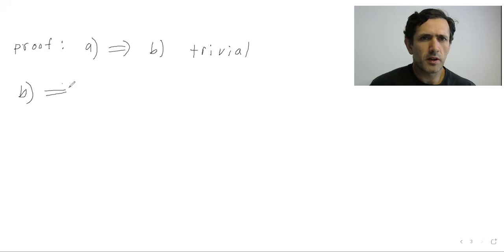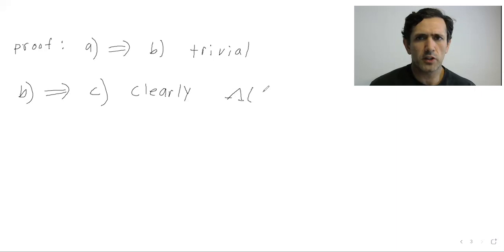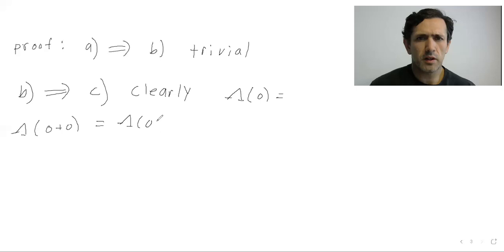There's nothing to prove A implies B: if it's continuous, that means it's continuous at all points, so certainly it means it's continuous at zero. Let's prove B implies C. It's fairly clear that you plug in zero to a linear functional, you get zero — just because zero is zero plus zero, use linearity. Subtract, you can cancel one of these, so this is going to be zero.